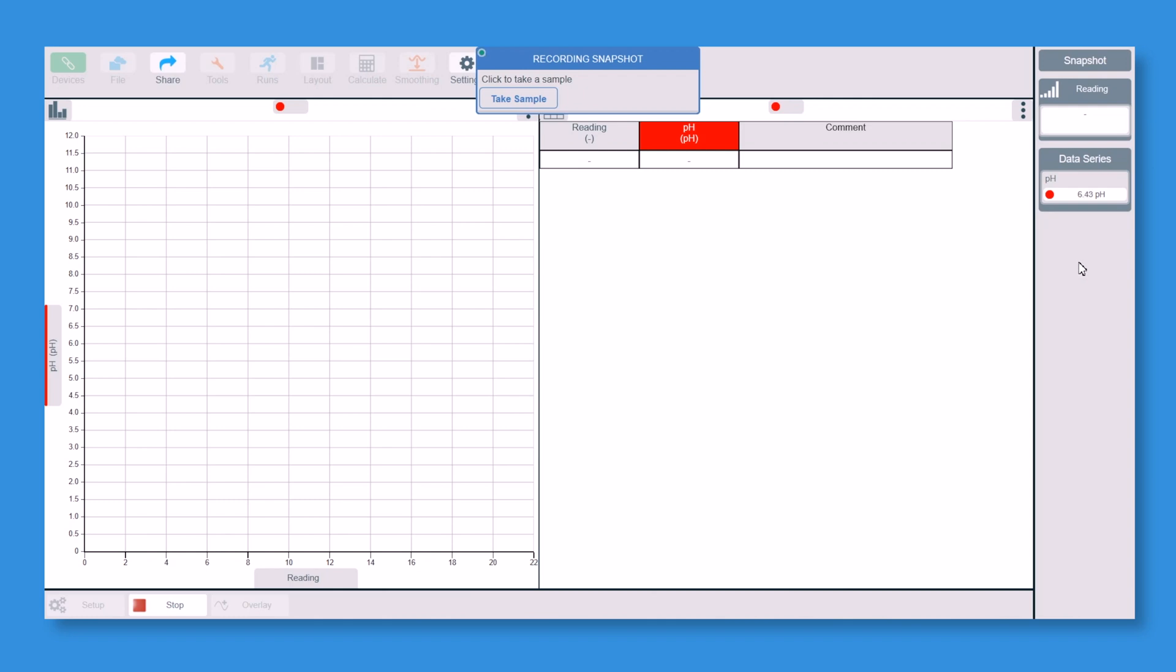So it takes about 20 seconds maximum before it settles. So it's going up 6.3, 6.4, there you go, slowing right down now. So there you go, 6.5, 6.6, we'll take a reading now.